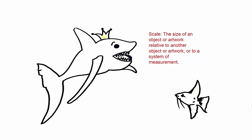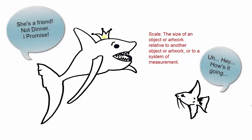Let's say that we were to compare him to his friend Angela the angelfish. Once we compare the size of the shark to the size of the angelfish, we are comparing two separate objects. When we compare the size of an object or artwork relative to another object, artwork, or to a system of measurement, we are talking about scale. We would not say that the proportion of Harold is large in comparison to Angela, because proportion only discusses the one object. That would be an incorrect use of the term. In this case, Harold is larger in scale than Angela.